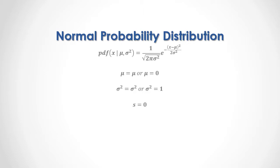Normal probability distribution has a skewness equal to 0. Normal and standard normal probability distribution have an excess kurtosis equal to 0. The reason for this is that normal and standard normal probability distribution have a kurtosis equal to 3.